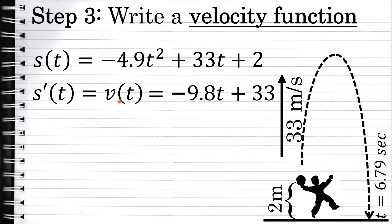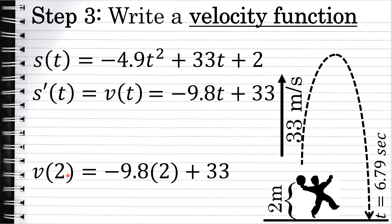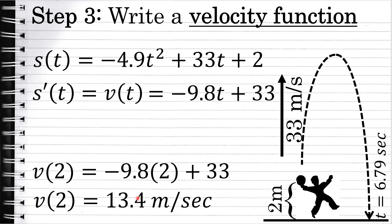The velocity function provides a way to tell the velocity of this object at any point in time. For example, after 2 seconds, the velocity of the ball is given by v of 2: negative 9.8 times 2 plus 33, which is 13.4 meters per second. Two seconds after the ball leaves the thrower's hand — initially traveling at 33 meters per second — gravity has slowed it down to 13.4 meters per second.